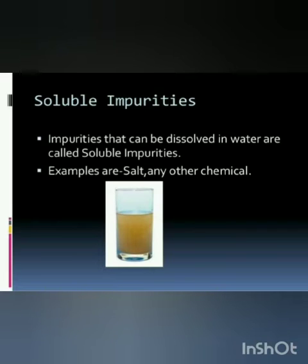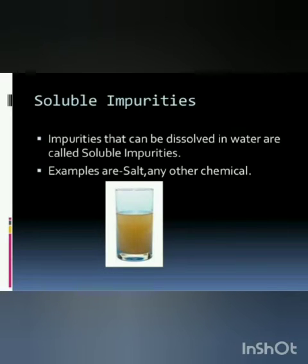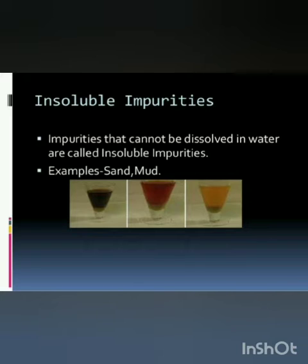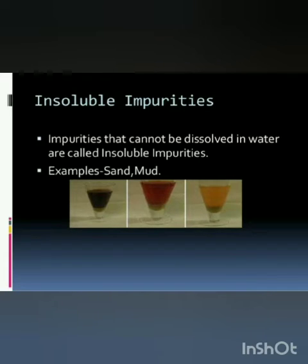Impurities jo hai beta woh do types ki hoti hai. Ek soluble impurities, doosri hoti hai insoluble impurities. Soluble impurities woh hoti hain jo hamein dikhai nahi deti, jaise namak — salt soluble impurities hoti hai. Insoluble impurities woh hoti hain jo hum dekh sakte hain, jo hamein dikhai de, jaise sticks, mud, stones — woh hamein dikhte hain ke is paani mein impurities hain, yeh saaf nahi hai.